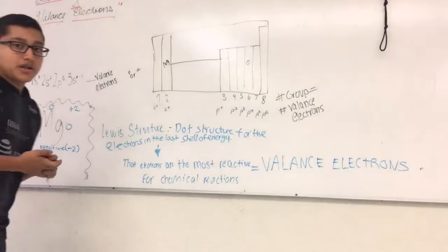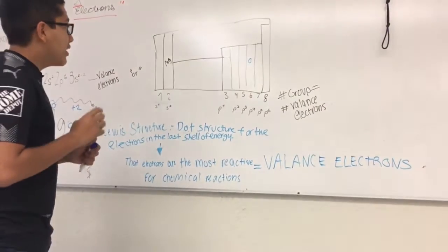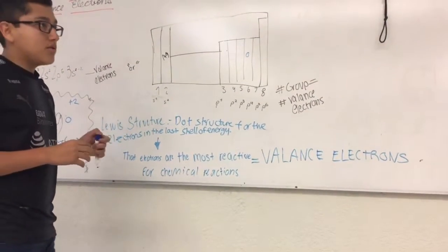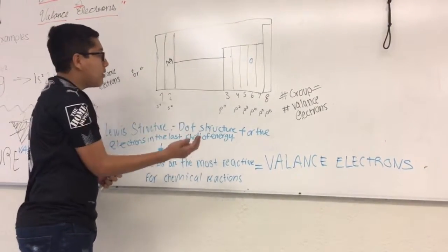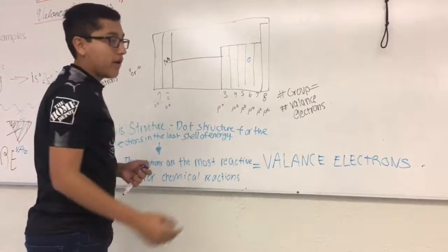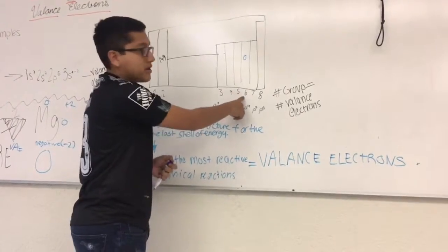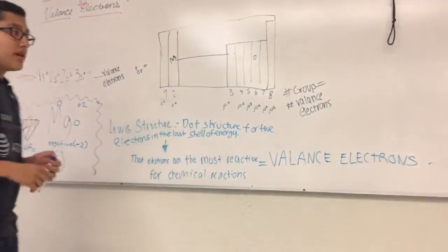I'm going to make another example with Oxygen. We are going to see the periodic table. We conclude that Oxygen is in group number 6, so we have 6 valence electrons.